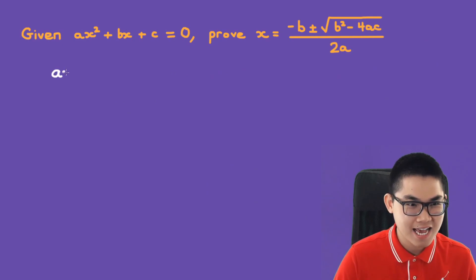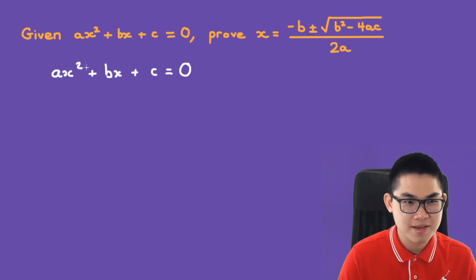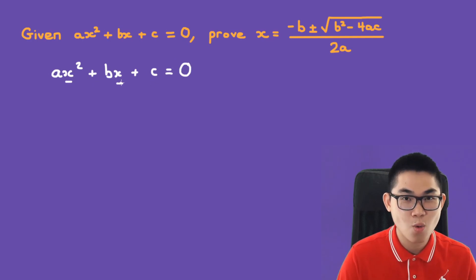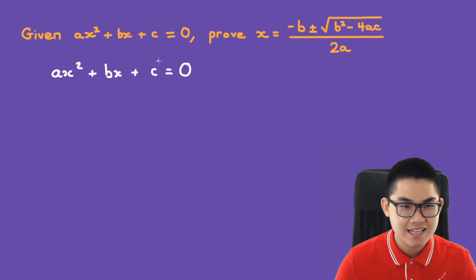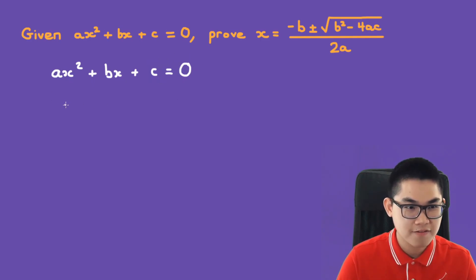We have a times x squared plus bx plus c is equal to 0. The first step is to have all of the x's on one side of the equation. That means we subtract c from both sides of the equation, so we have a times x squared plus bx is equal to negative c.